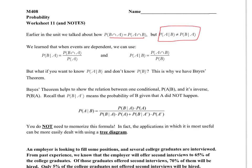When events are dependent, we can use the following equations. Notice the only difference is dependent upon which value is given. In the first one, A is my given event, and the probability of B given A equals the AND statement divided by that given probability — whichever probability was after the bar is under the bar. In the second equation, B is the given information, so the probability of B is the denominator. In both cases, the probability of B and A and the probability of A and B are the same.